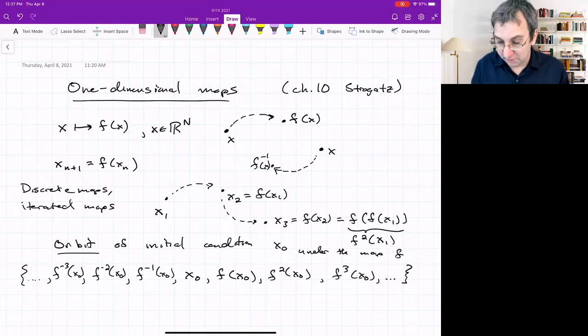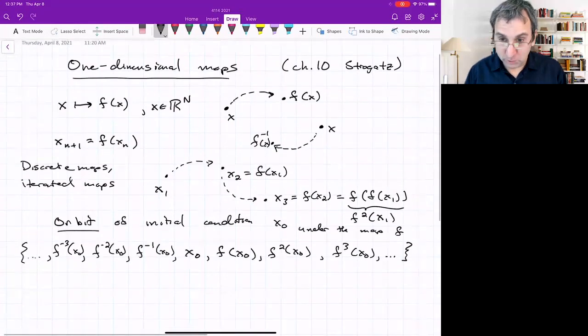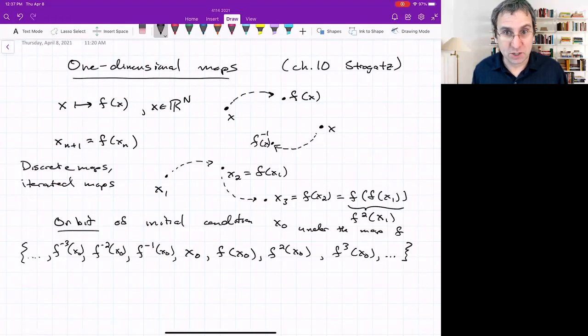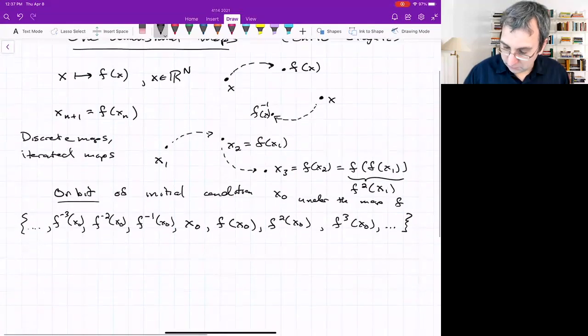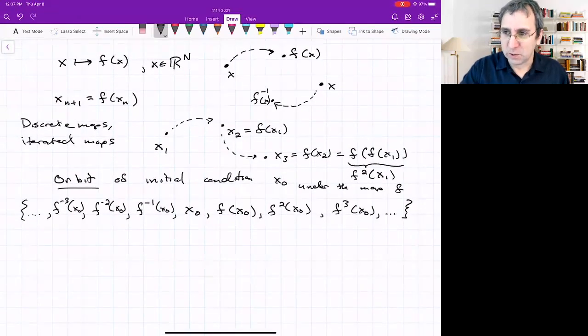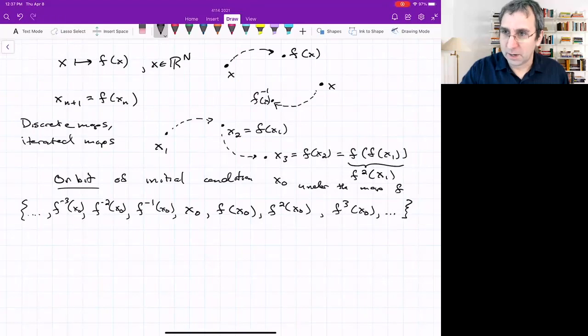I'm speaking generally in n dimensions, in Rn. We will specialize to one-dimensional maps and a particular one-dimensional map, the logistic map that has a lot of interesting behavior as you vary a bifurcation parameter. You might be wondering, what are the connections with the real world? Why look at maps?